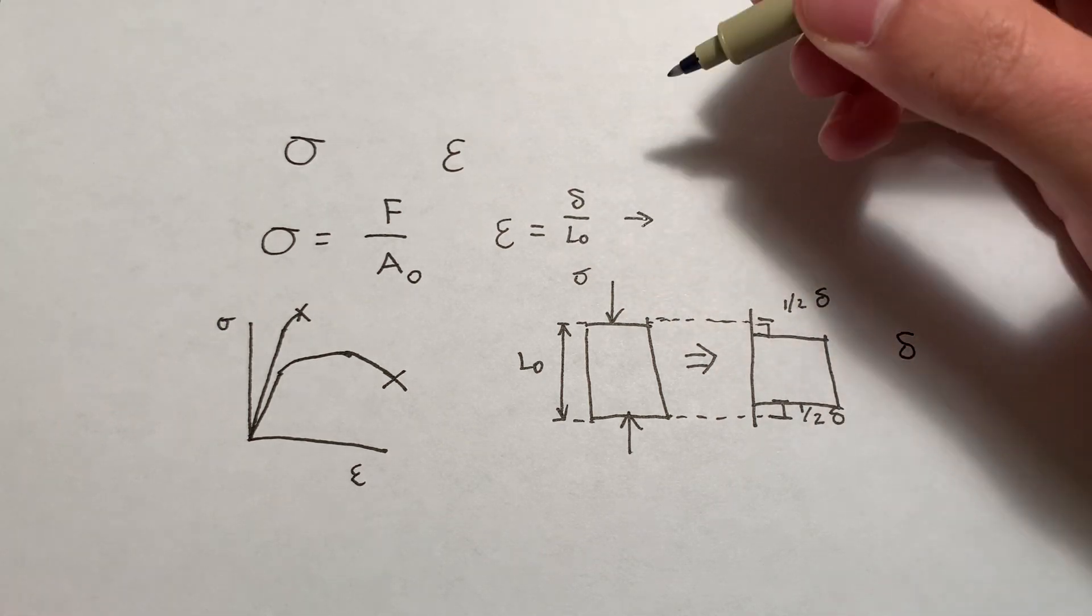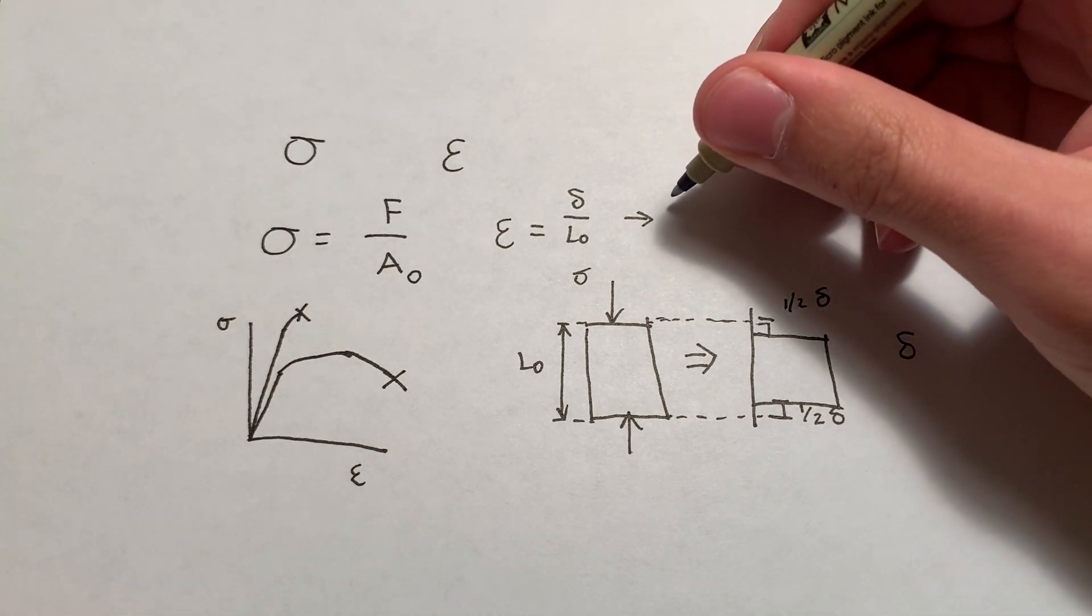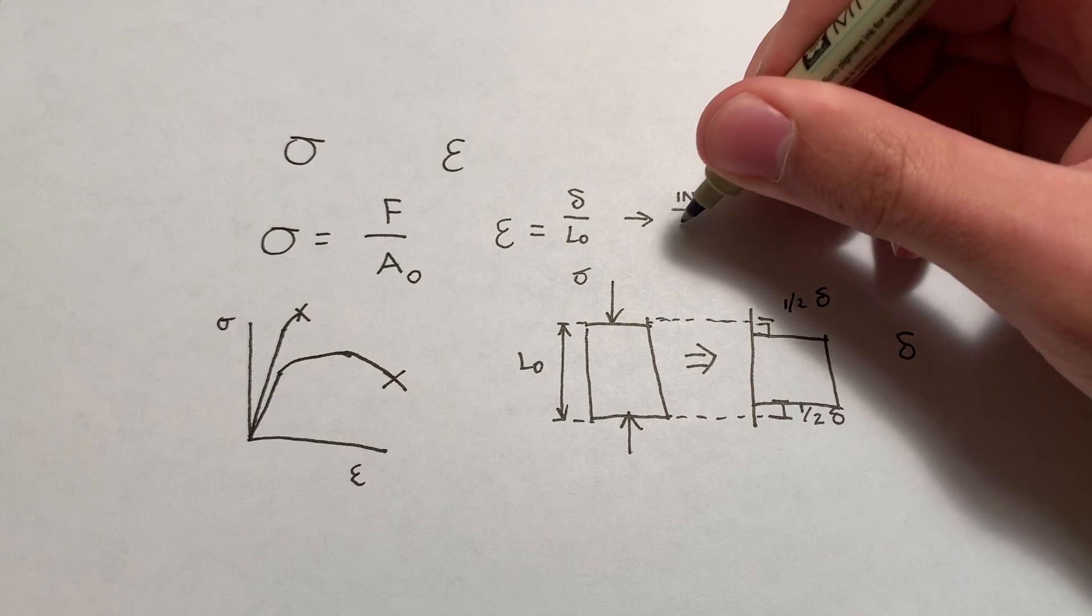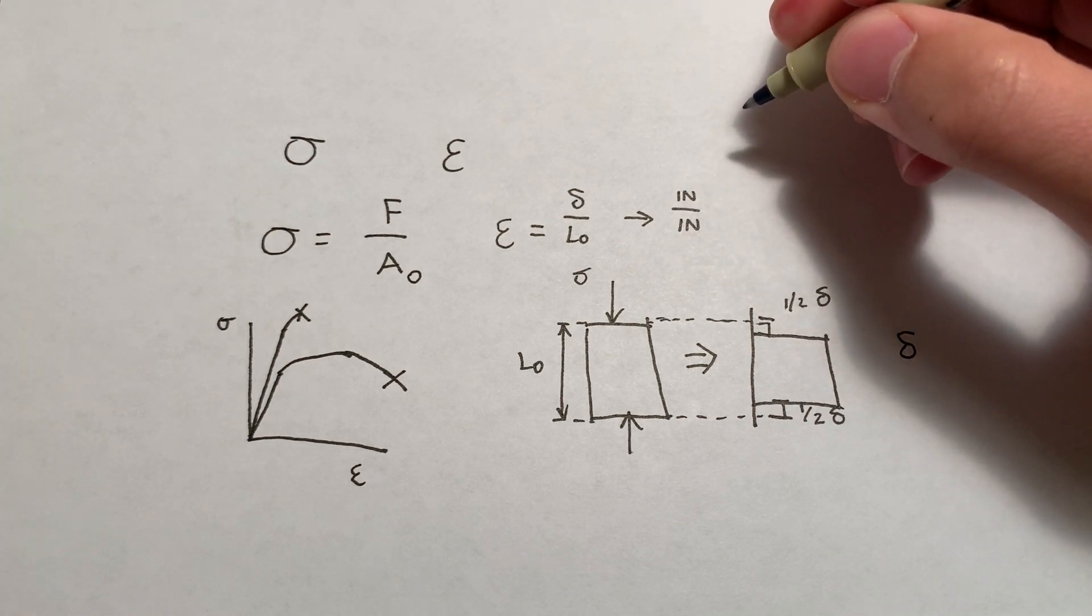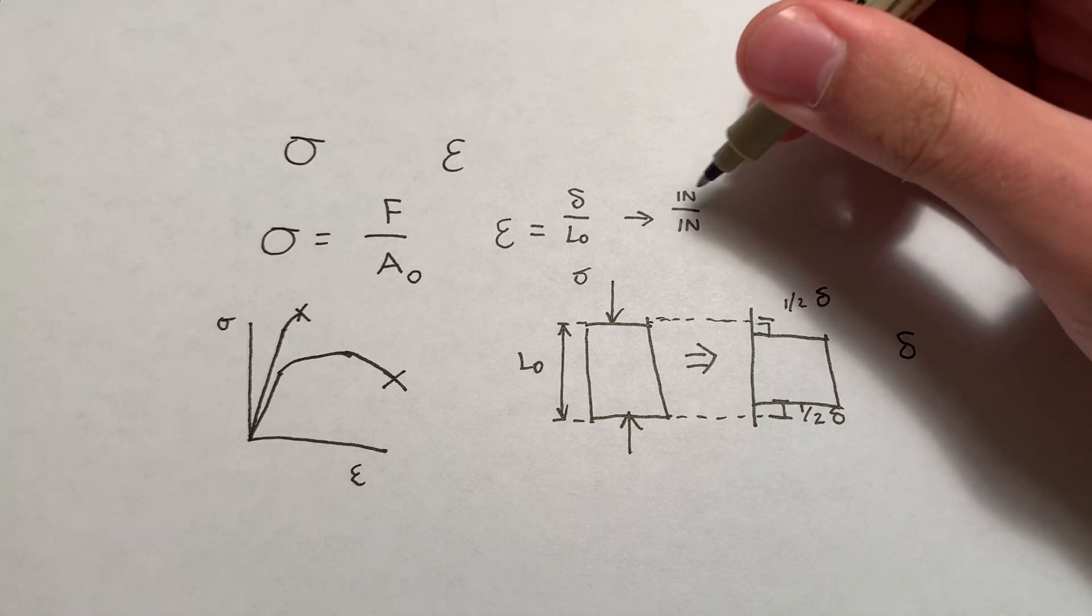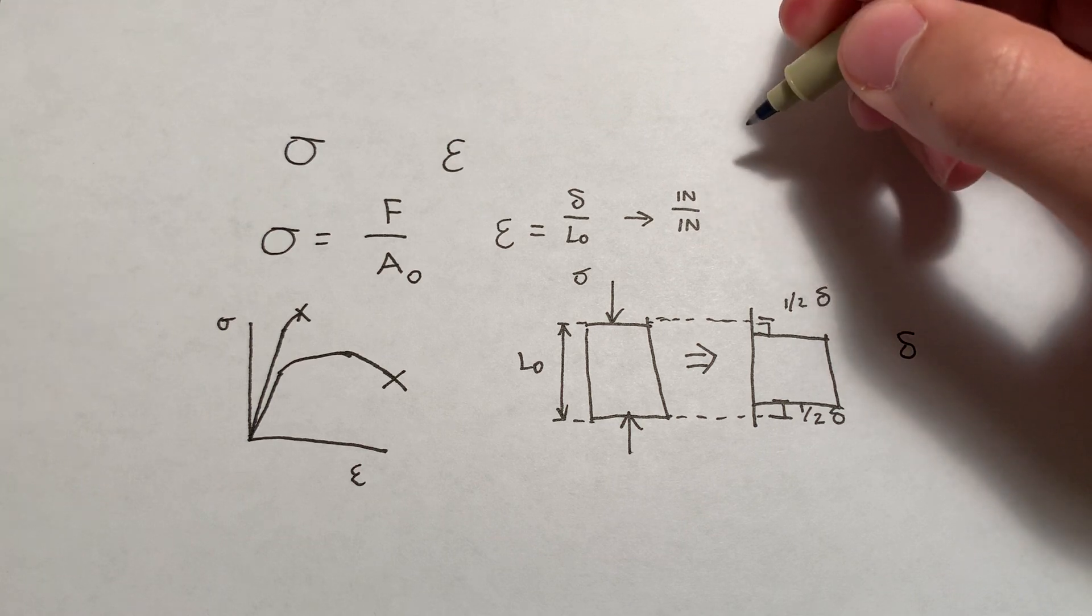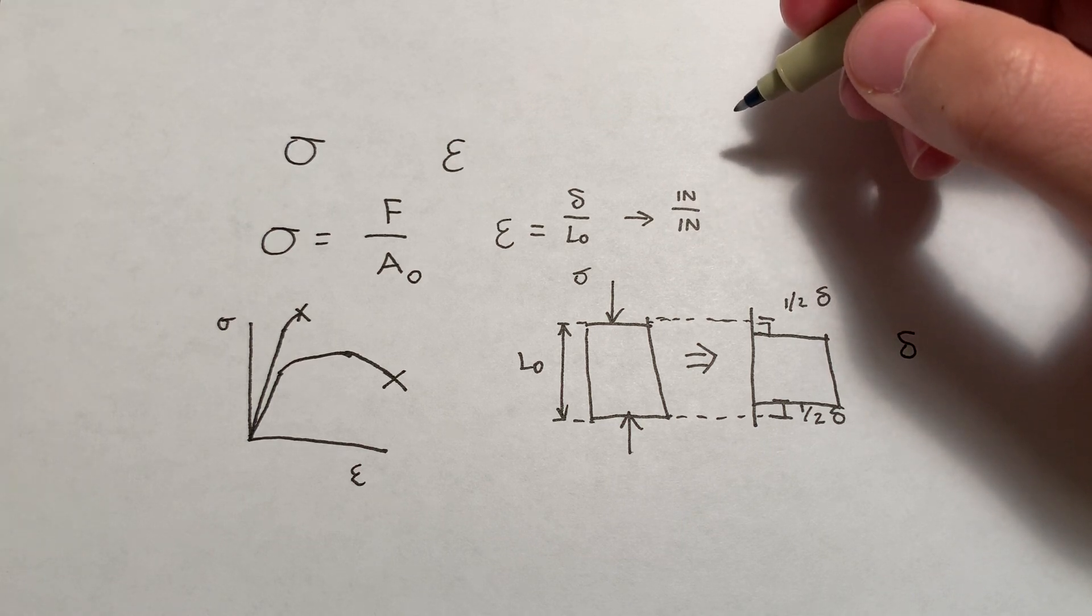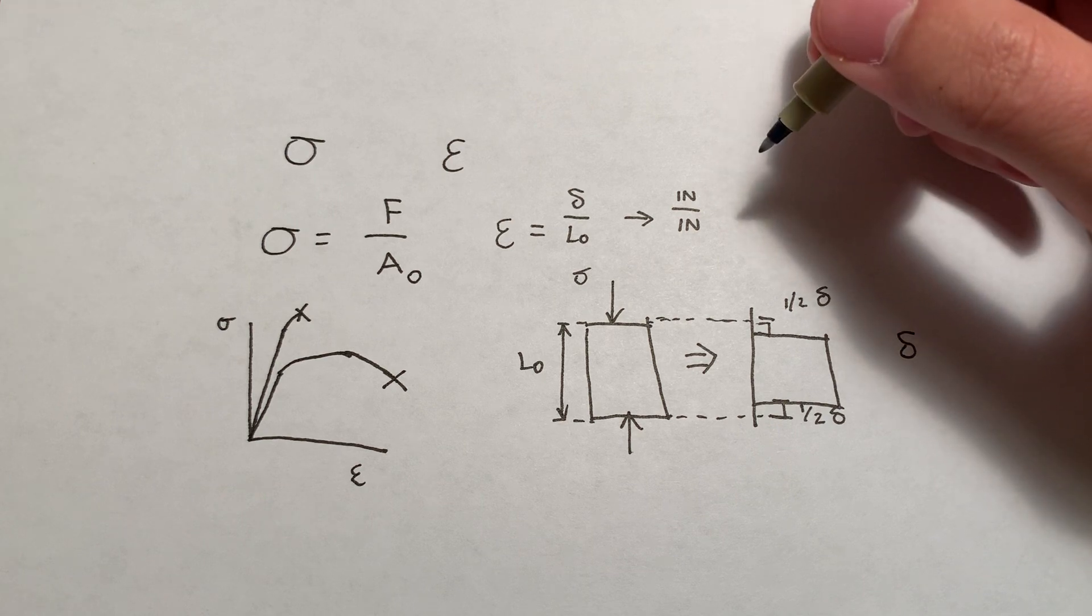And of course, looking at unit analysis, those are both units of length. So here in the U.S., we're probably going to be using inches. Everyone else, you know, just think of it as centimeters. I don't need to hear your crap about why our system is bad. Inches per inch, that's going to cancel out and give you something that's unitless. So you can really think of strain as a percentage, right? A percent change in the length of the material you're dealing with.